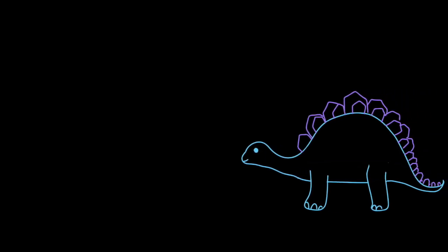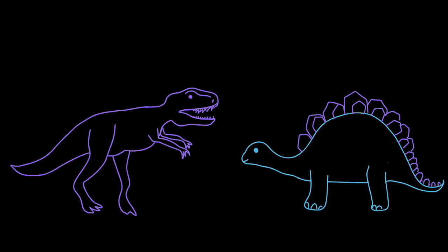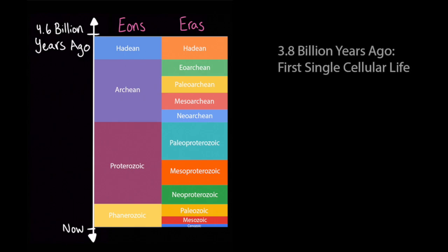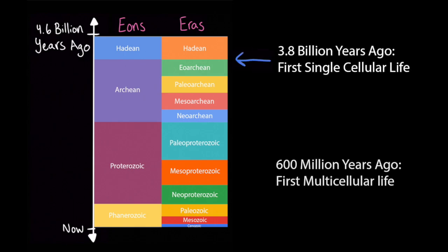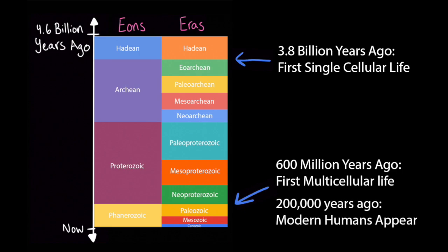Relative dating is how geologists figured out that stegosauruses were extinct long before T-Rexes even existed. It also helped them figure out the first single cellular life formed about 3.8 billion years ago, and the first multicellular life formed about 600 million years ago. And they figured out that modern humans didn't even exist until about 200,000 years ago, which is right at the very end of the geologic timescale.